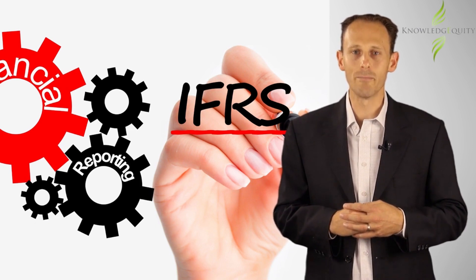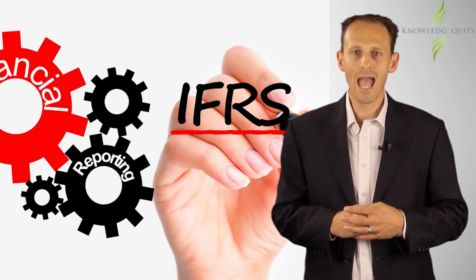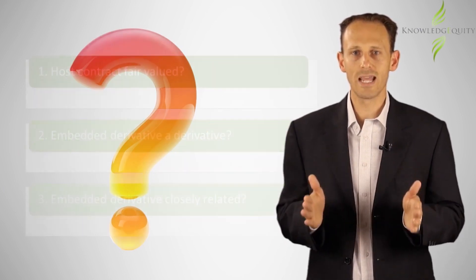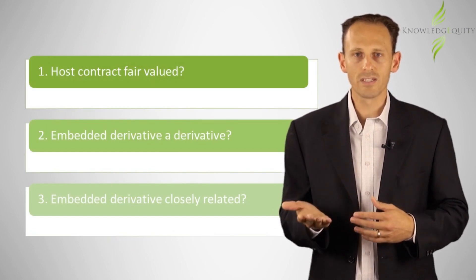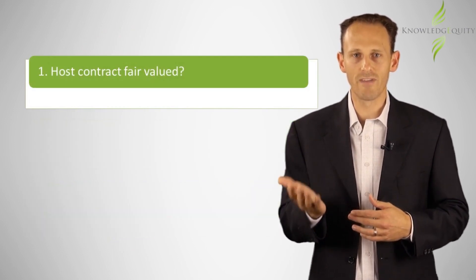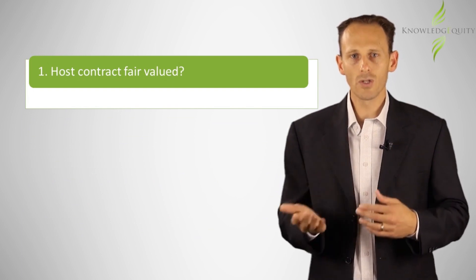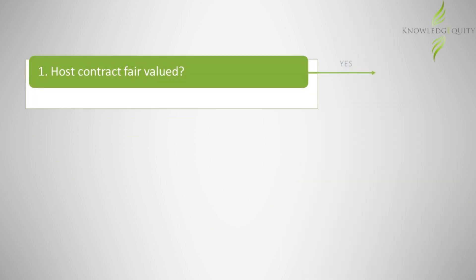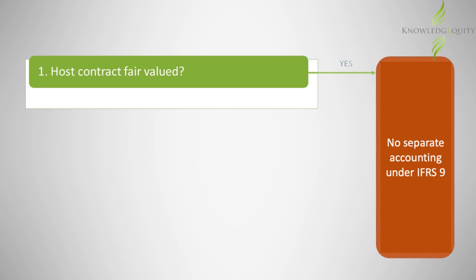Once we have determined that an embedded derivative exists, how do we determine whether it should be accounted for separately in the financial statements? There is a three-step process to determine this. Firstly, is the host contract fair valued? If the host contract is already fair valued in the financial statements, with fair value changes going directly to profit and loss, then there is no need to separately account for the embedded derivative. This is because the embedded derivative is already being fair valued as part of the host contract.